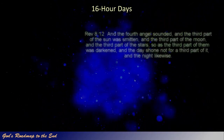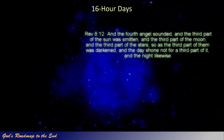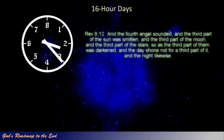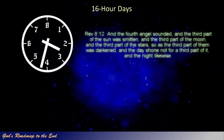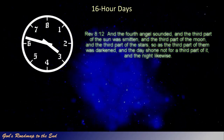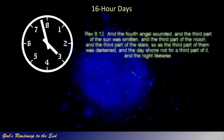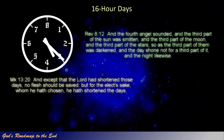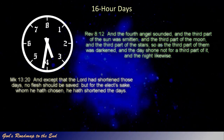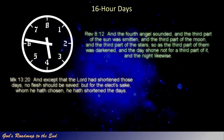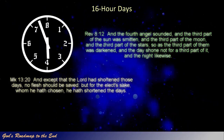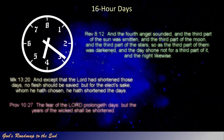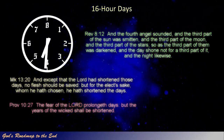Revelation 8 verse 12: 'And the fourth angel sounded, and the third part of the sun was smitten, and the third part of the moon, and the third part of the stars, so as the third part of them was darkened, and the day shone not for a third part of it, and the night likewise.' Mark 13 verse 20: 'And except that the Lord had shortened those days, no flesh should be saved. But for the elect's sake, whom he hath chosen, he hath shortened the days.' Proverbs 10 verse 27: 'The fear of the Lord prolongeth days, but the years of the wicked shall be shortened.'